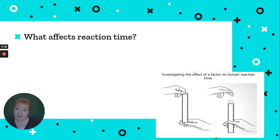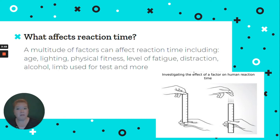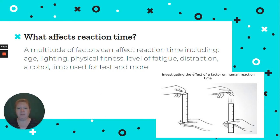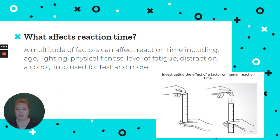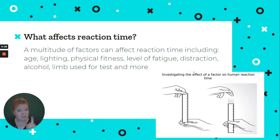So what are some things that can affect our reaction time? A lot. Age — it might get slower as we get older. Lighting — we might respond slower because the lighting is poor or too bright, making it hard to process. Our physical fitness. Our level of fatigue — how tired are you? How distracted are you — somebody is talking to you, there's lots of noise going on. Alcohol affects our reaction time. Also the limb you use for your test — there's usually a difference between using your dominant hand versus your non-dominant hand.